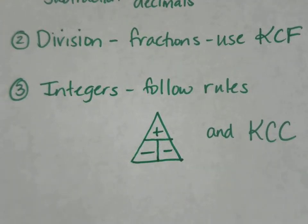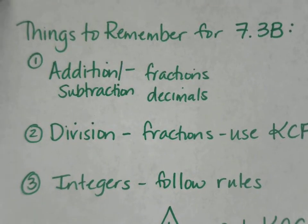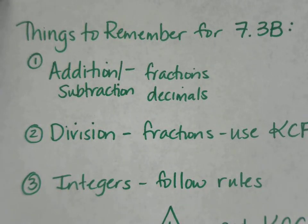For integers, make sure you follow the integer rules. Some of you like using the triangle method. When subtracting, we typically use Keep Change Change - keep the first number, change the sign to addition, and change the second number to its opposite. That's 7.3B. Try your best on this STAAR test, and if you need help, come see me.